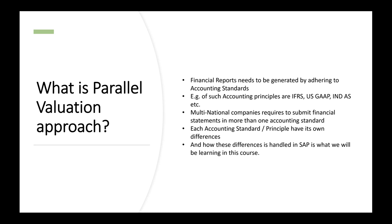The catch here is that each accounting standard has its differences, and those differences need to be handled within the ERP system. Taking a classic example of depreciation rules: some accounting standards might say depreciation on furniture should be 15% on an annual level, whereas another accounting standard might say depreciation on furniture should be 10% on an annual level. That 5% delta needs to be handled — so how that 5% difference in depreciation from one valuation approach to another should be handled is what we are going to see, and what solutions are available within SAP.